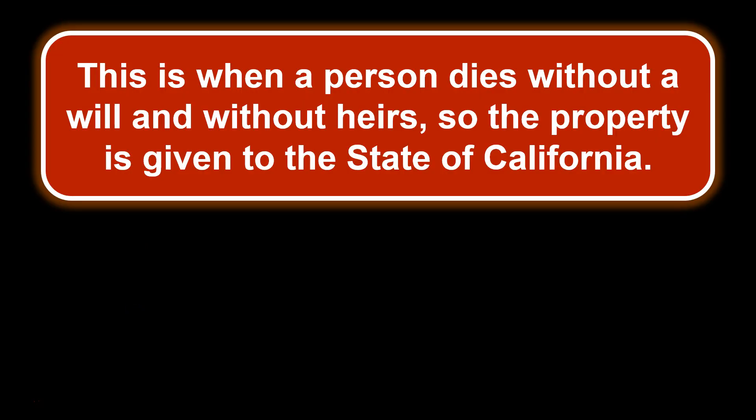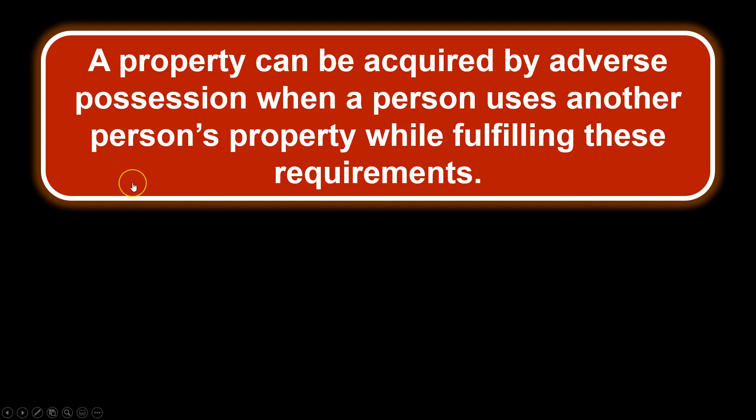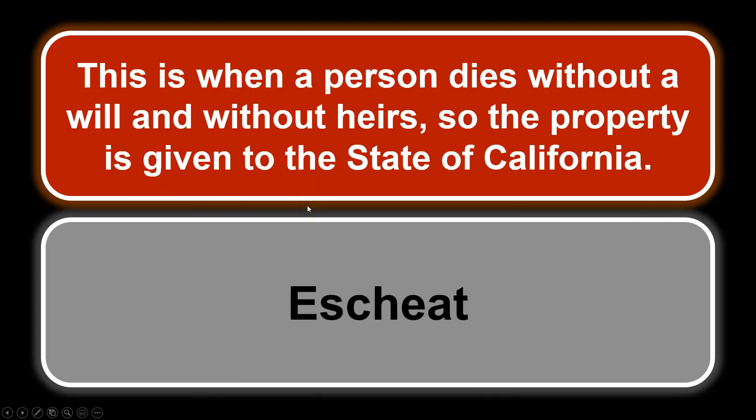This is when a person dies without a will and without heirs, so the property is given to the state of California. There's no will, no heirs. The property will be deeded to the state of California after a five-year period has passed and no one has a claim to it, because it is assumed there will be heirs. But once there aren't heirs and it's been five years, it will escheat to the state of California.